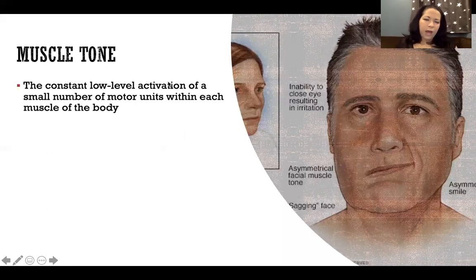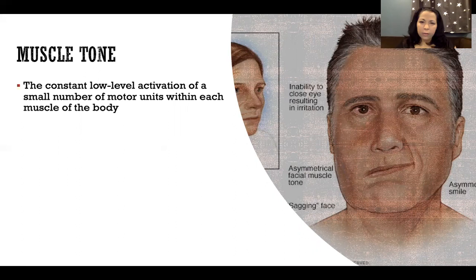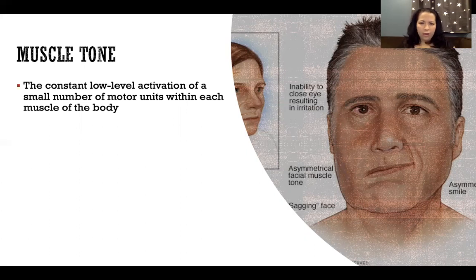Muscle tone is the constant low-level activation of a small number of motor units within each muscle of the body. All of our muscles have muscle tone in a healthy muscle. I like to think of it as the muscle idling — like when a car idles, the muscle is on and activated, ready to go at any time, but not enough to cause any motion or activity.